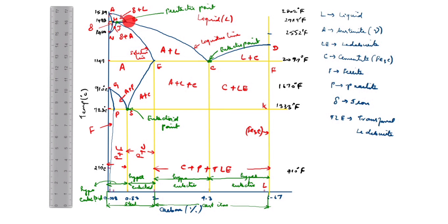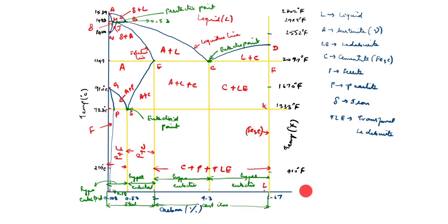We will take 0.1 here, 0.18 here, and 0.53 here. The first line is 0.1, this line is 0.18, and this is 0.53. This side is temperature in Fahrenheit — I will write it here as temperature Fahrenheit. This is the iron-carbon diagram. Thanks for watching this video. Thank you.